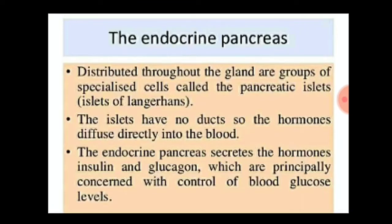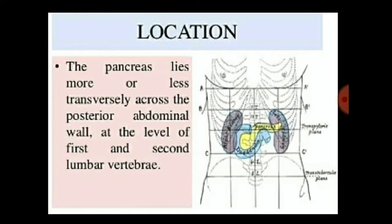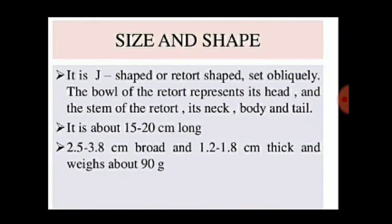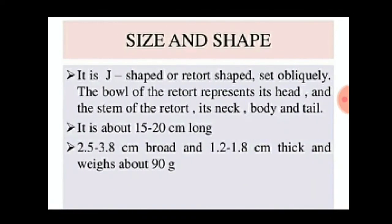Now we will discuss the location of the pancreas. The pancreas lies more or less transversely across the posterior abdominal wall at the level of the first and second lumbar vertebrae.